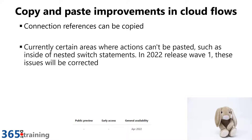Jumping over to Power Automate: one of the things I really like the idea of is copy and pasting things in a Power Automate flow, but in execution it's always fallen short for a couple of reasons — one around connection references, and the other around nested statements and things that can't be pasted. Both of those are being addressed and improved in the Wave 1 release, and we'll see that hit general availability in April 2022.